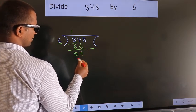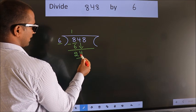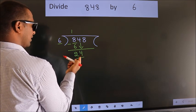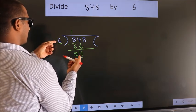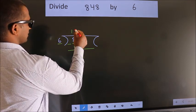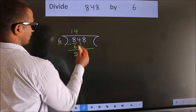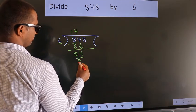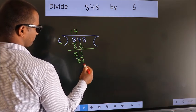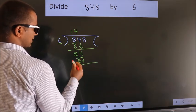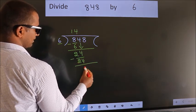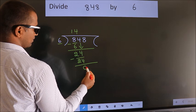So 24. When do we get 24 in the 6 times table? 6 fours are 24. Now we subtract, we get 0.